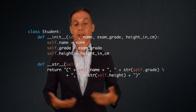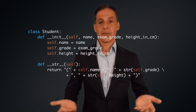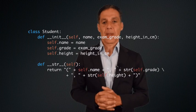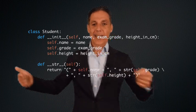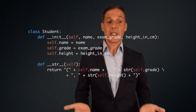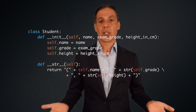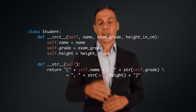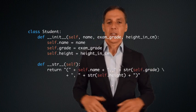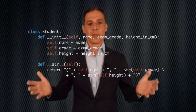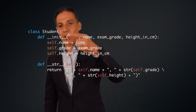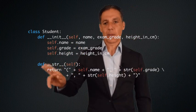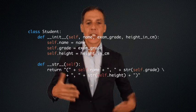Now you have to start thinking about functionality — what do you want to offer? One of the first things you should always define is a print function, because printing is a really nice and simple way to debug your code. Create a student, print it out, see if it's correct. Change something, print it out again. So let's get in the habit: after creating the constructor (__init__), go ahead and create a print statement (__str__).